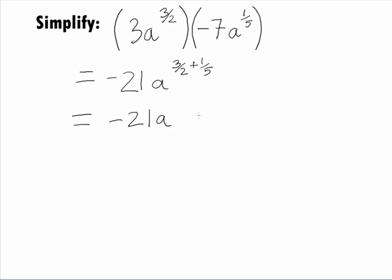Rewriting our fractions with the least common denominator of 10, we get negative 21a raised to the 15 over 10 plus 2 over 10 power.